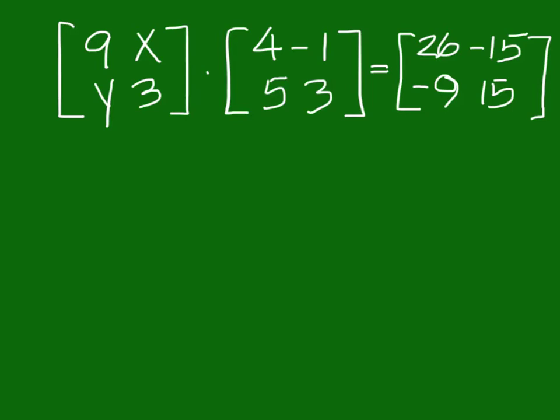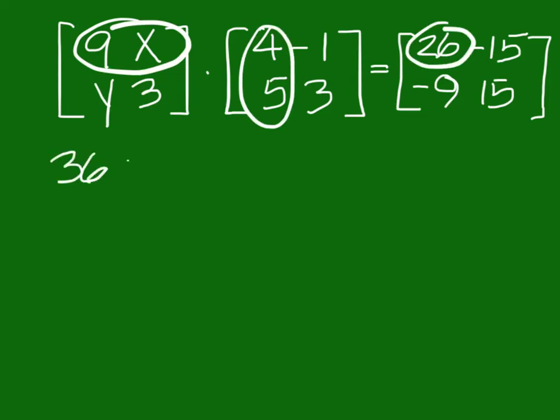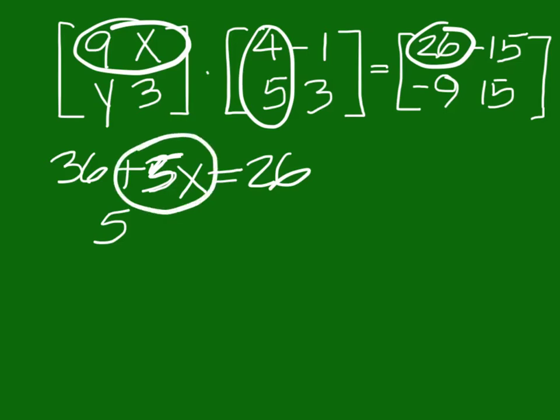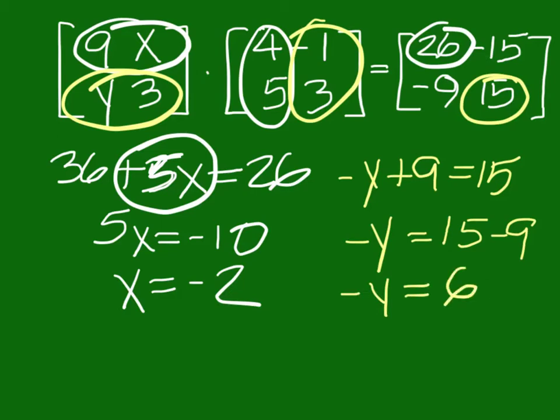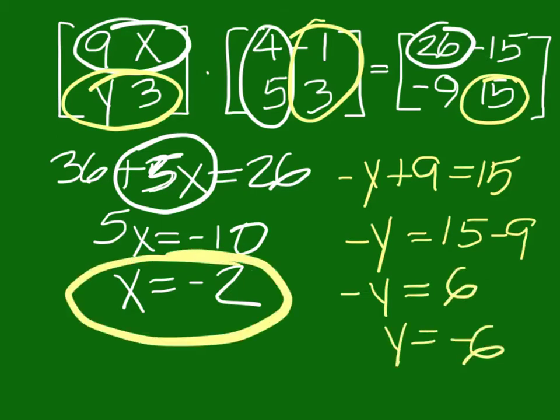For this problem, we can go here, here, and here. For the X to come up with 36 plus 20, not 20, but 5. 5X equals 26. Well, if you just look at it, 36 plus something has to be 26. So this has got to be a negative 10. So the answer is negative 2. And for the Y, we have to go here, here, and here to come up with a negative Y plus 9 equals 15. So negative Y would have to equal 15 minus 9, which is going to be 6. Y would be a negative 6. Negative 2, negative 6.